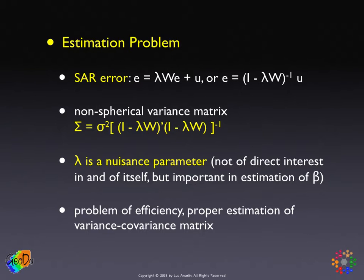We have a spatial autoregressive error term where the error is a function of its spatial lag: e is a function of lambda W times e, and then a remaining idiosyncratic error term. That means the error term e is a function of u by means of the inverse Jacobian transformation — the inverse transformation of the matrix I minus lambda W.